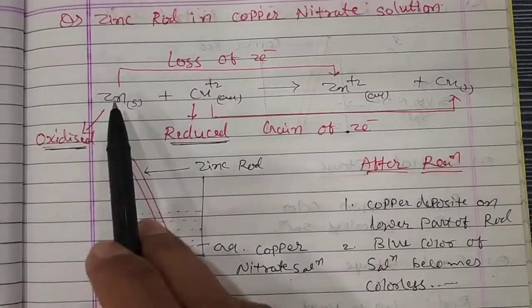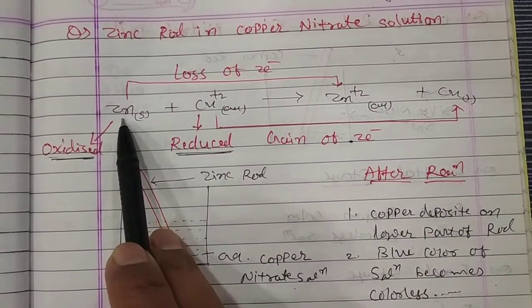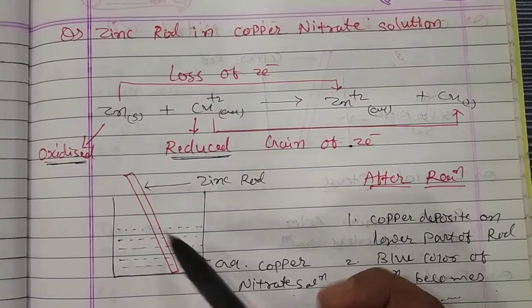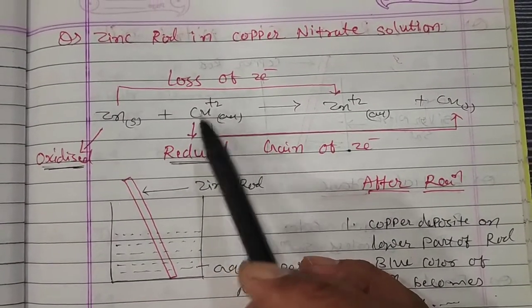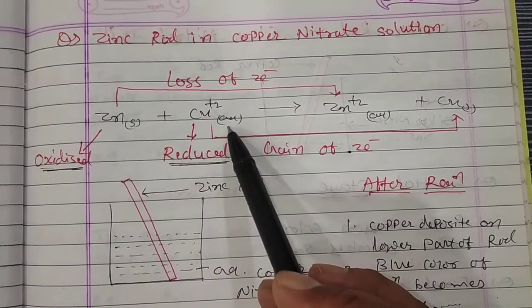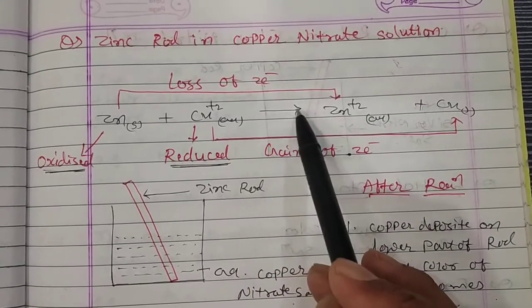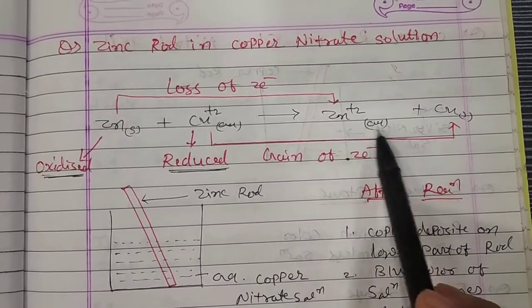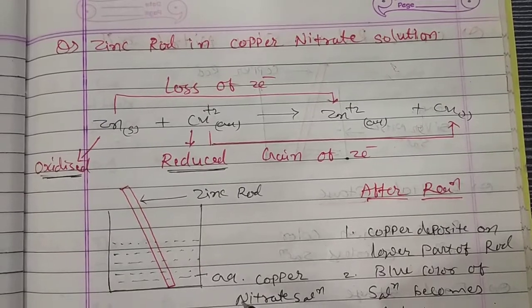We will look at the chemical reaction: Zn solid, because the zinc rod is in solid form. In the copper solution, that is copper²⁺ in aqueous means it is a solution. The reaction gives Zn²⁺ in aqueous and copper in solid.